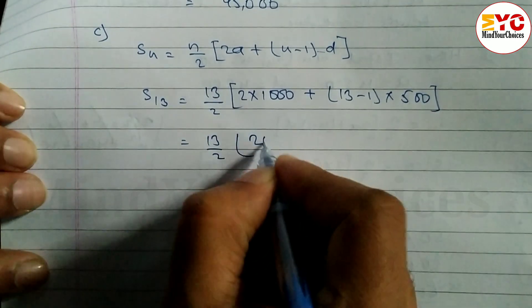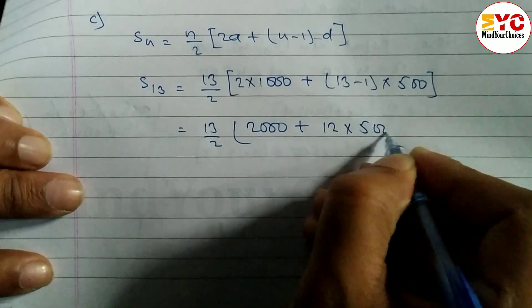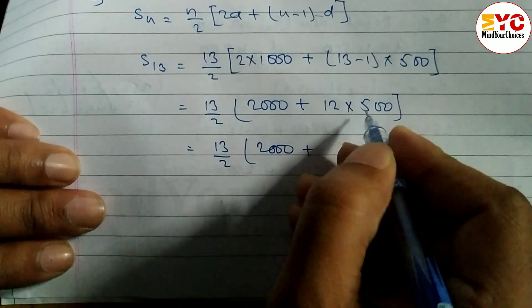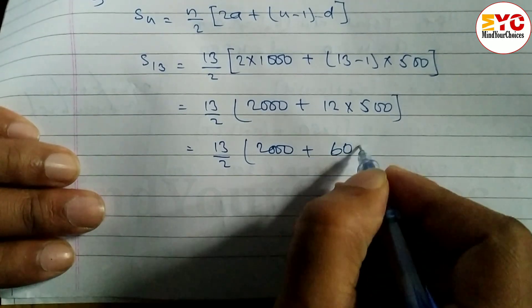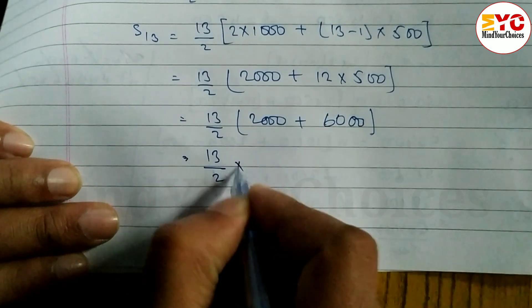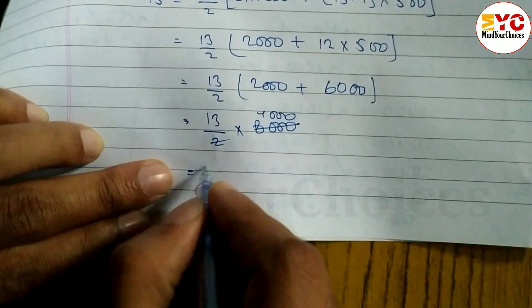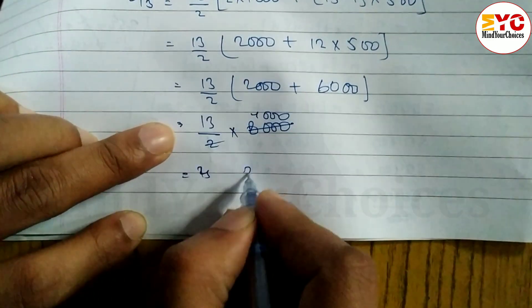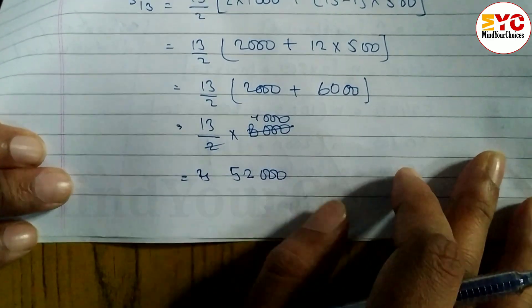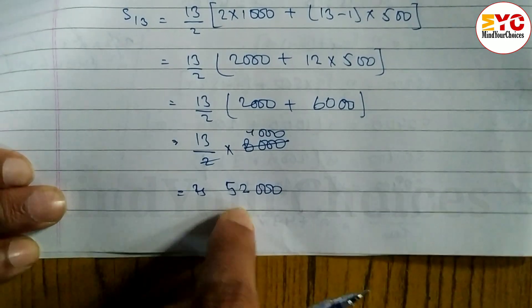S13 = 13/2 × (2000 + 12×500) = 13/2 × (2000 + 6000) = 13/2 × 8000 = 13 × 4000 = 52,000. So after 13 months the total deposited is rupees 52,000, which is more than 50,000.